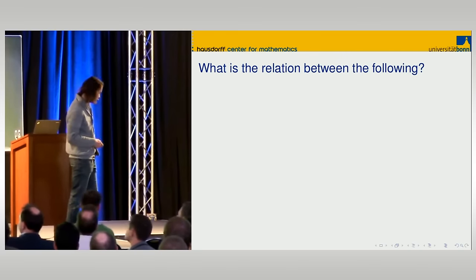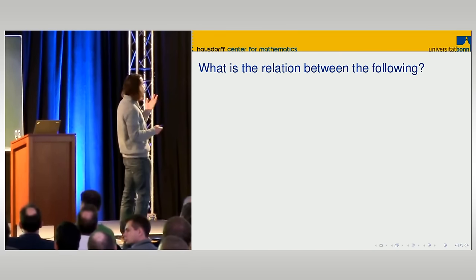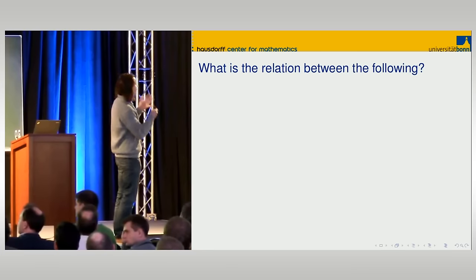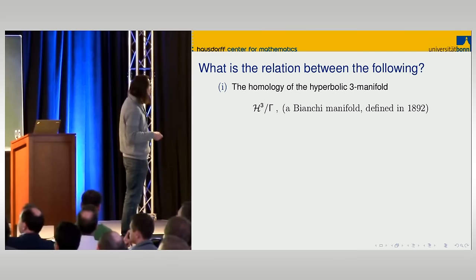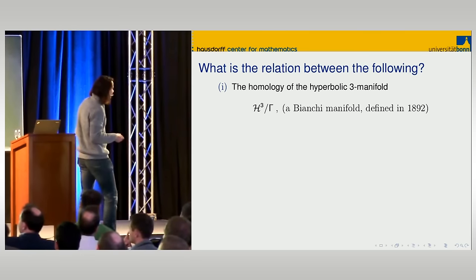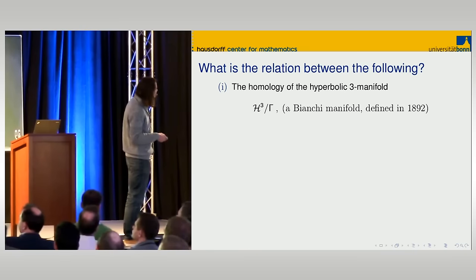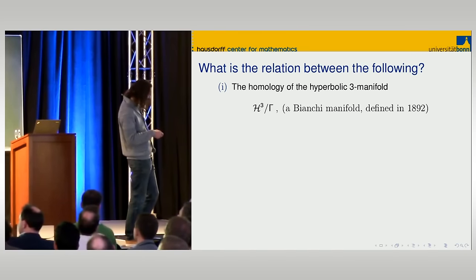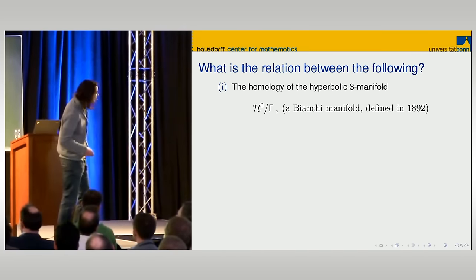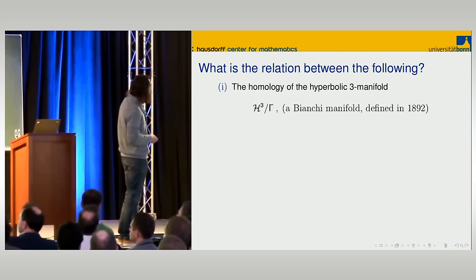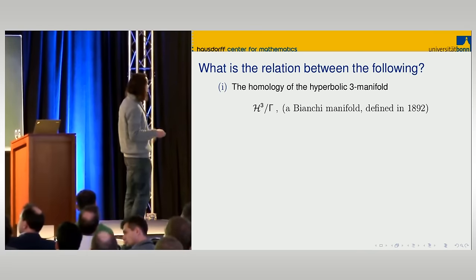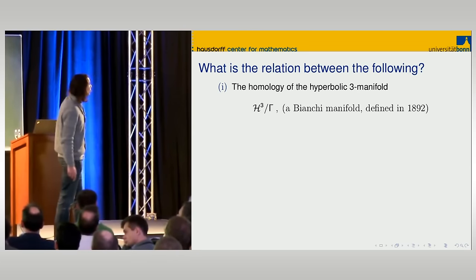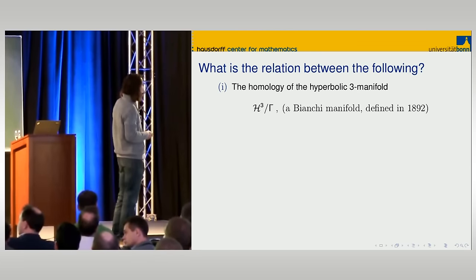Let me start by giving an instance of this relationship between locally symmetric spaces and Galois representations as a very concrete example. We look at a specific hyperbolic 3-manifold. It's called a Bianchi manifold — they were introduced already in the late 19th century, so they're quite classical objects. I'm interested in the homology of this hyperbolic 3-manifold, which belongs to the world of topology or geometry.